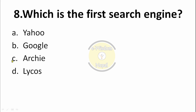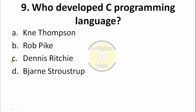Question number 9: Who developed the C programming language? C is one of the most famous programming languages. Options are given. The correct answer is option D — Dennis Ritchie — he developed the C programming language.